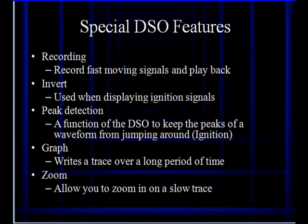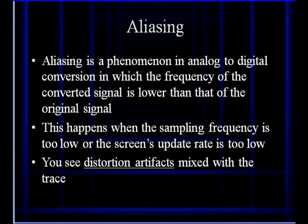Now let's take a look at some of these artifacts we're going to be talking about. Aliasing is a phenomenon in analog to digital conversion in which the frequency of the converted signal is lower than that of the original signal. This is what causes some of those peaks to apparently disappear. This happens when the sampling frequency is too low or the screen's update rate is too slow.